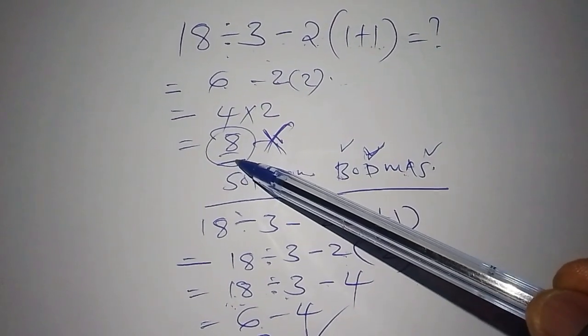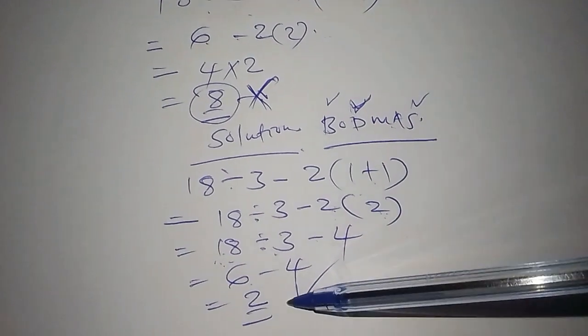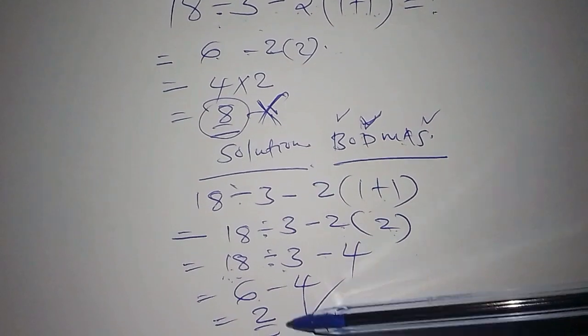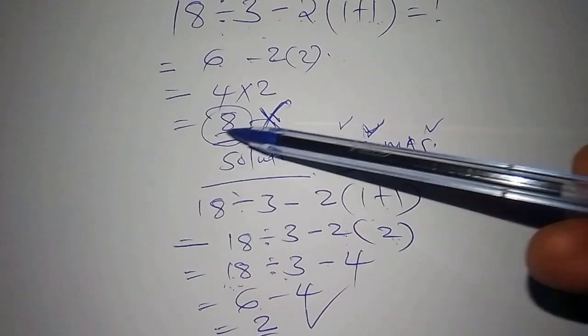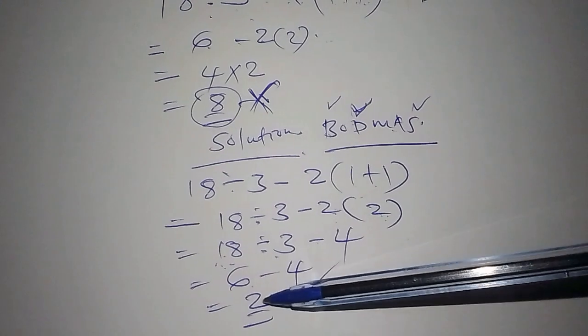But when you go with the best method, you shall find that you get your answer as 2. So among these two methods, a lot of people make this mistake by saying the answer is 8 instead of working it out the correct way by saying the answer is 2.